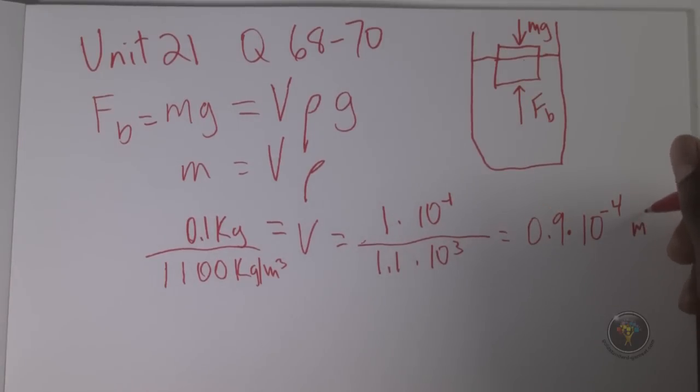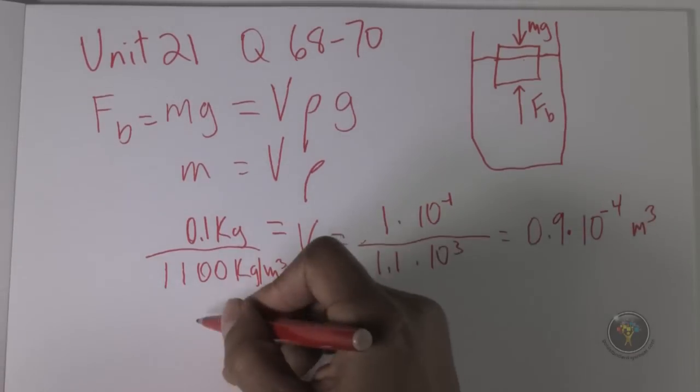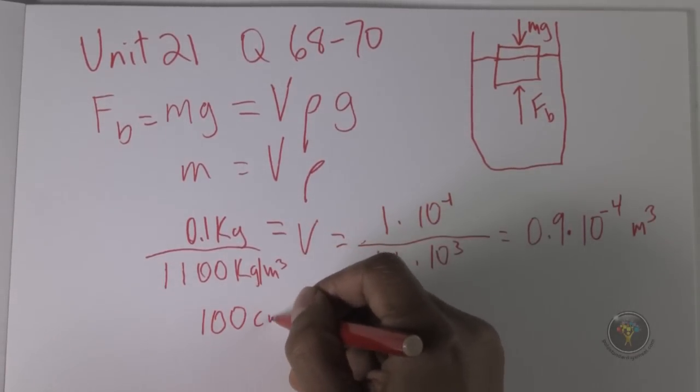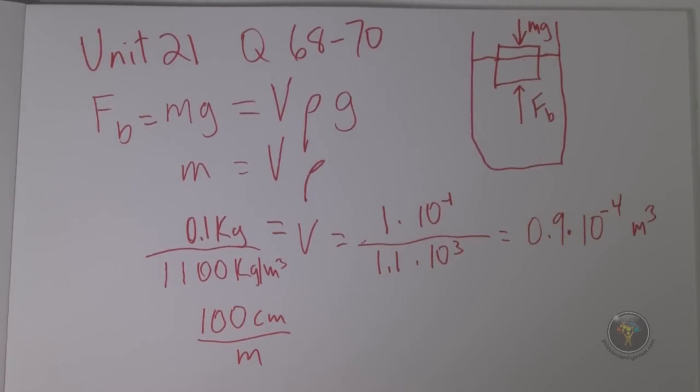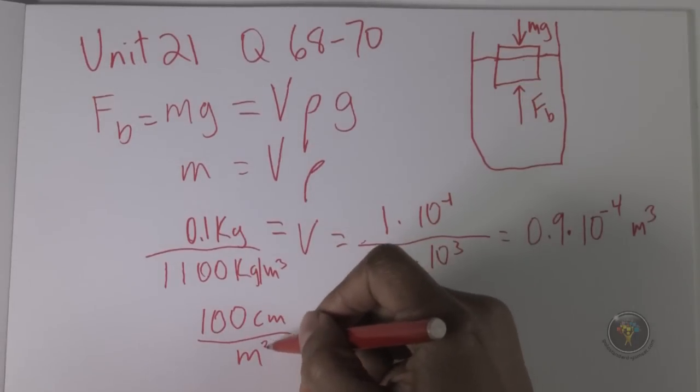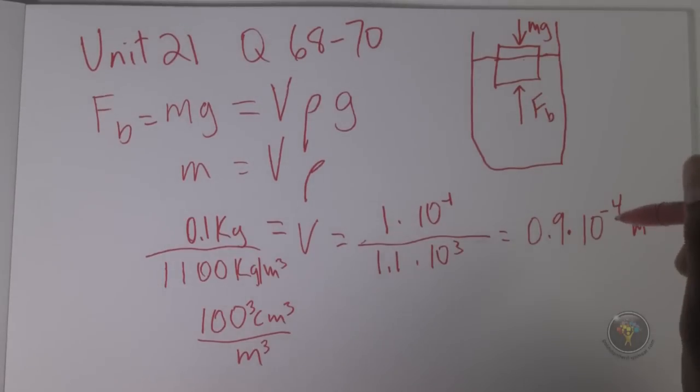Then you need to convert meters cubed into milliliters using dimensional analysis. We start with 100 centimeters in one meter. I need meters cubed, so I cube all of this. I cube the meters, cube the centimeters, and cube that.